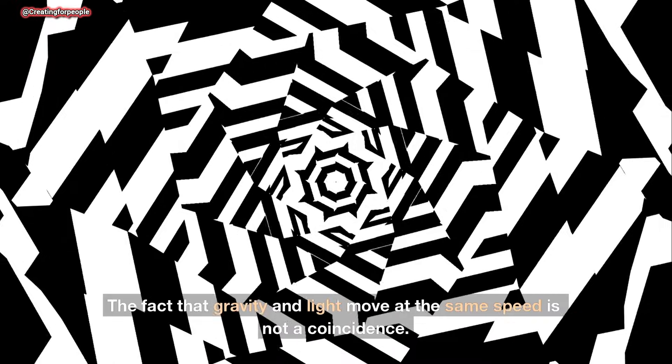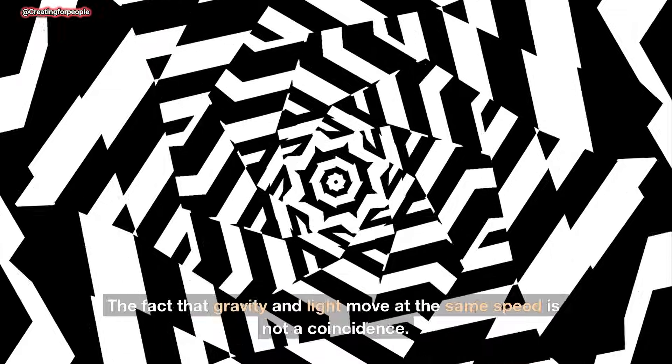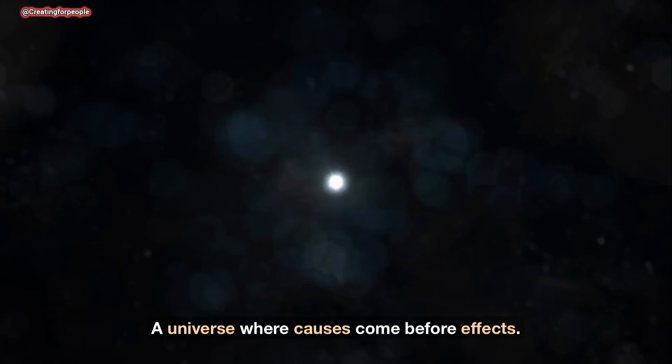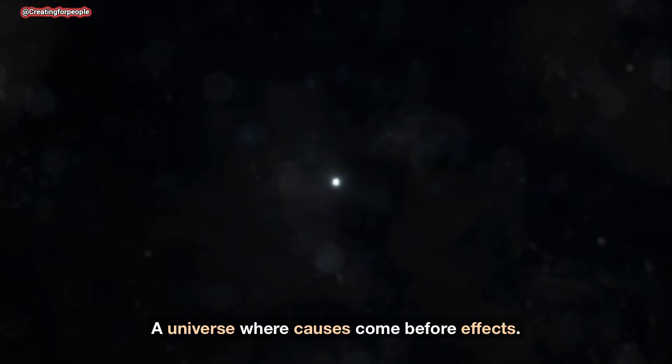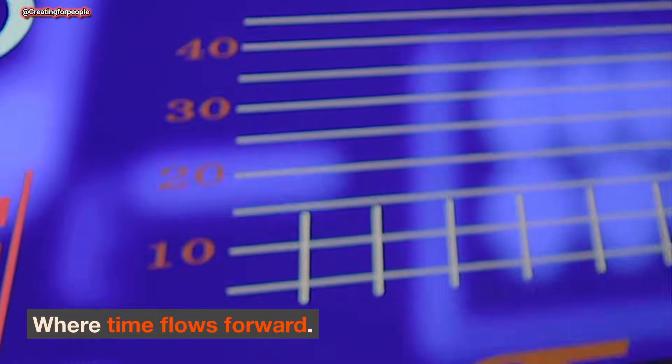Final thought. The fact that gravity and light move at the same speed is not a coincidence. It is a requirement for a universe that makes sense. A universe where causes come before effects, where orbits are stable, where time flows forward. The speed of light isn't special because of light. Light is special because it reveals the speed of reality itself. And gravity has been obeying that speed all along.